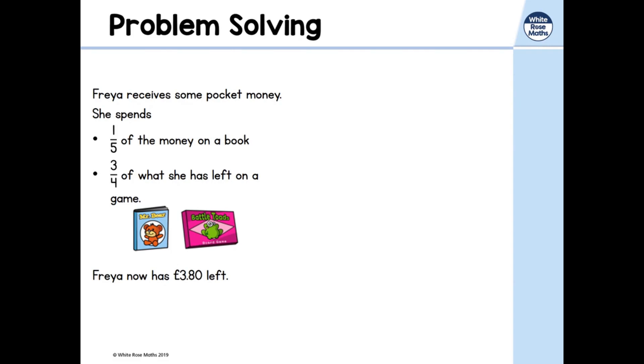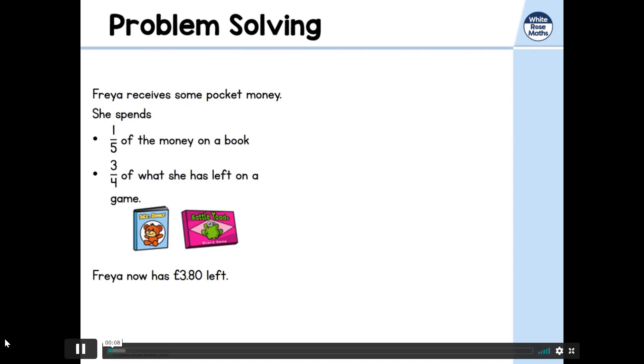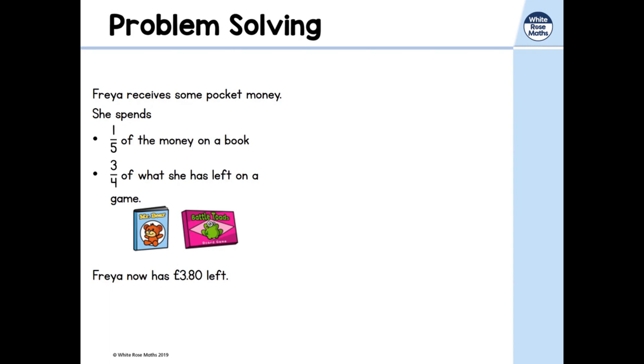Freya receives some pocket money. She spends one-fifth of the money on a book, three-quarters of what she has left on a game, and Freya now has £3.80 left.